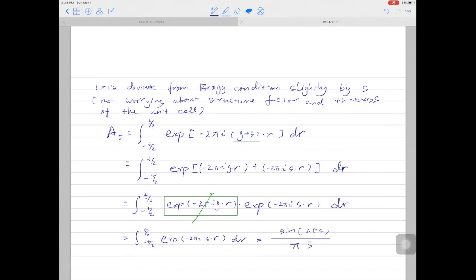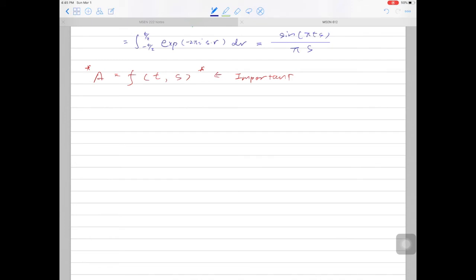The solution by integrating this exponential equation is this. So the amplitude of the diffracted beam is a sine function of t and s. t is the sample thickness, s is the deviation away from the perfect Bragg condition, which is referred as the excitation error. So what if we increase s? If we increase s, the total amplitude will decrease, so by tilting away from Bragg condition, the amplitude of the diffracted beam decreases.